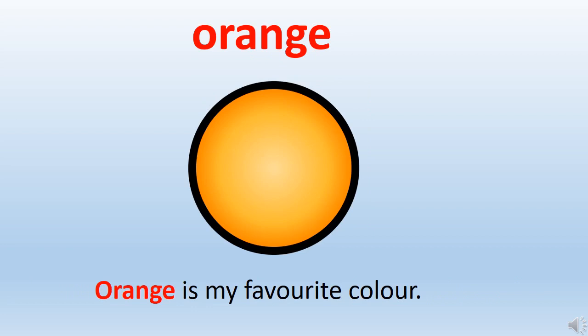The word is orange. Children, this is also a color, and orange is also a name of a fruit. And orange is a secondary color — when we mix red and yellow we get orange. So now let's use this word in the sentence: orange is my favorite color.